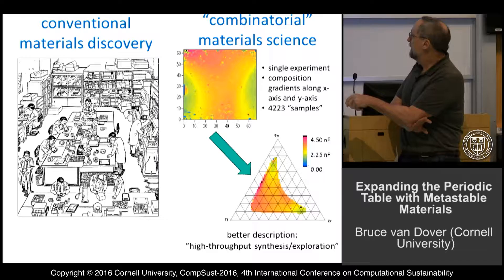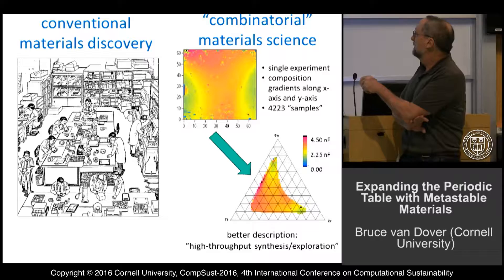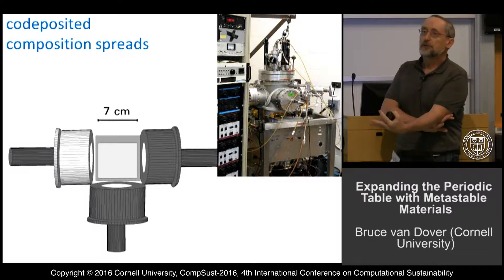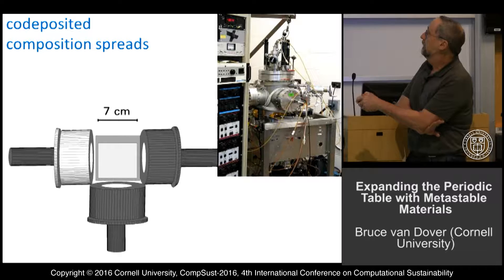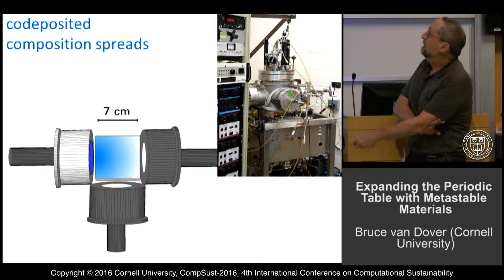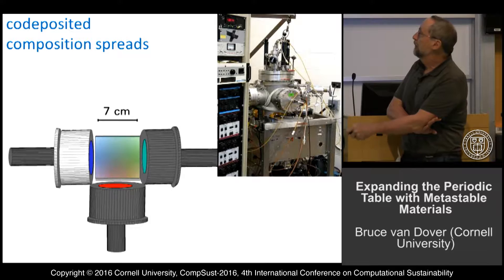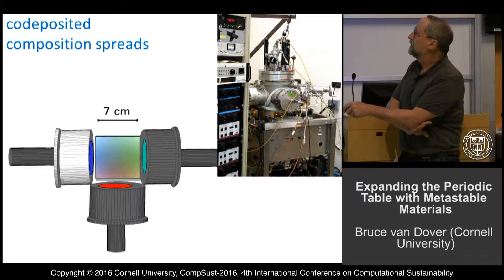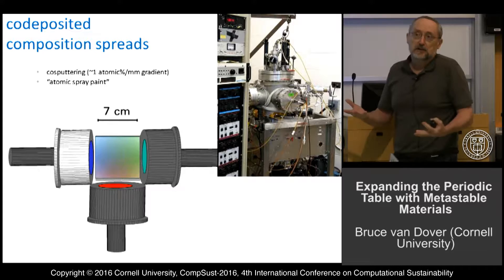Effectively 4,223 samples in this one experiment. This was actually titanium, zirconium, tin oxide, and the region of composition space that we covered is this region. We're looking at some property — in this particular case, capacitance, though we can look at all kinds of different properties. How do we actually make these things? It's vacuum deposition — you can think of it as atomic spray painting from three separate sources: a blue source, a red source, a green source. Turn them all on at the same time and the atoms come down intimately mixed.